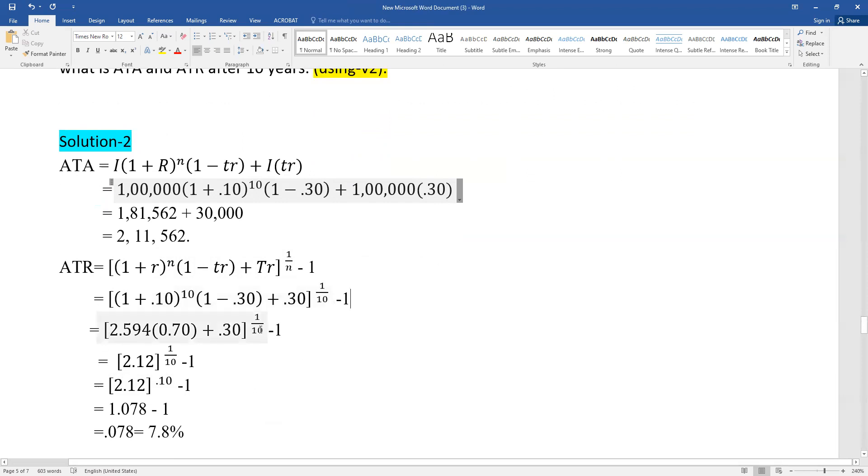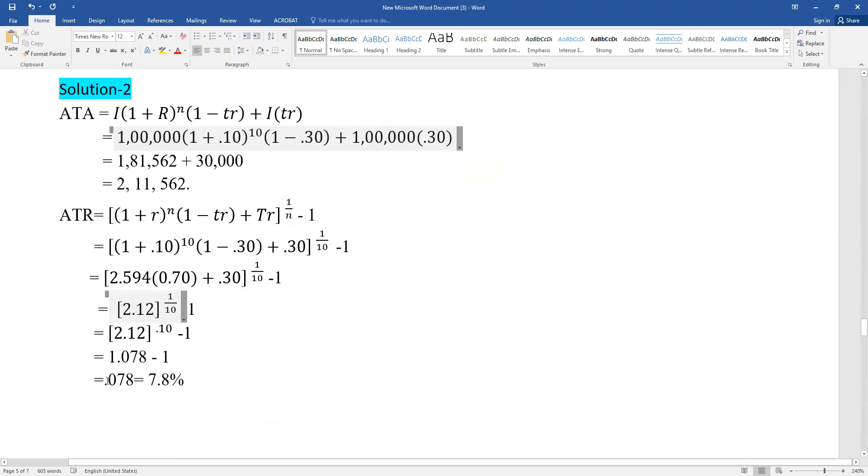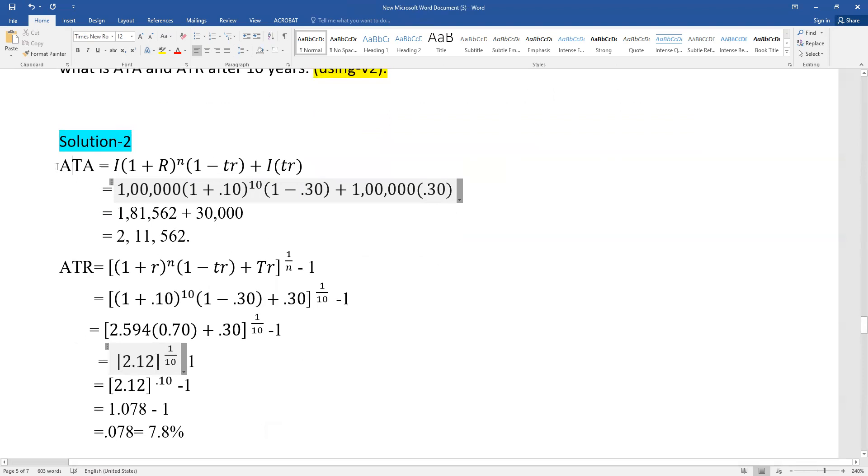The calculation gives us 1.078 - 1 = 0.078 = 7.8%. This is the ATR formula.